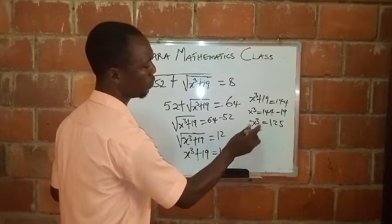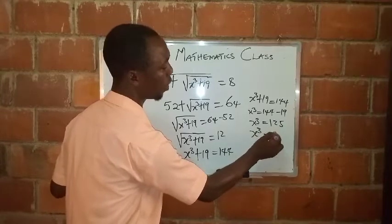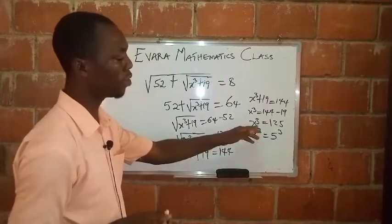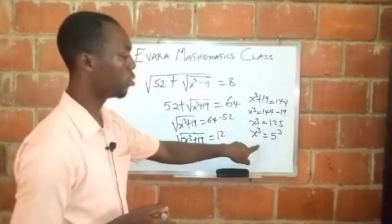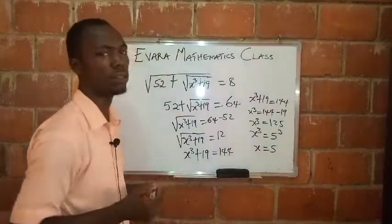So your value of this x cubed, you can express this 125 as 5 raised to power 3 also. So since their powers are the same now, it means the bases are also equal. So the value of x is 5.